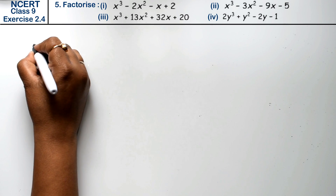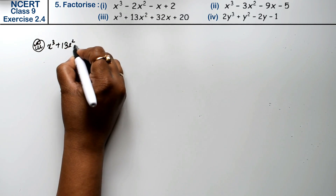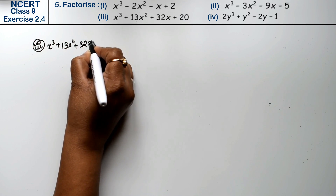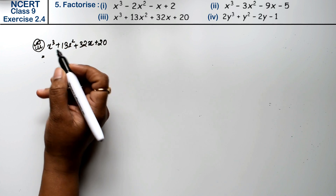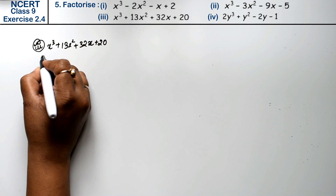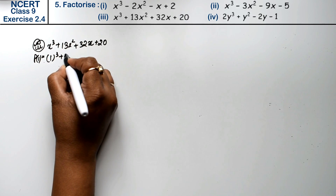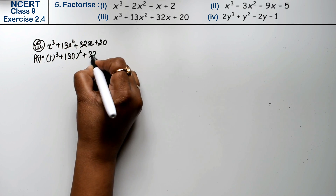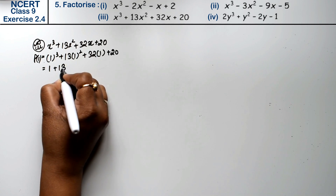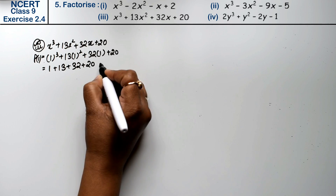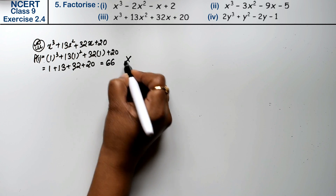Let's do the third part. The third part is x cubed plus 13x squared plus 32x plus 20. Testing x equals 2: 8 plus 52 plus 64 plus 20 equals 144, which is not zero. So 2 is not a factor.